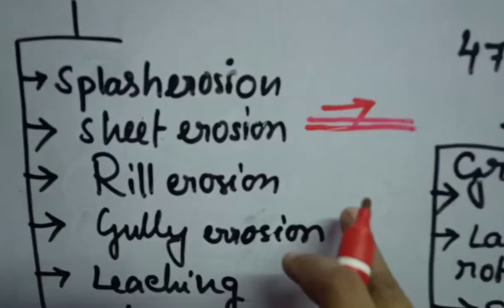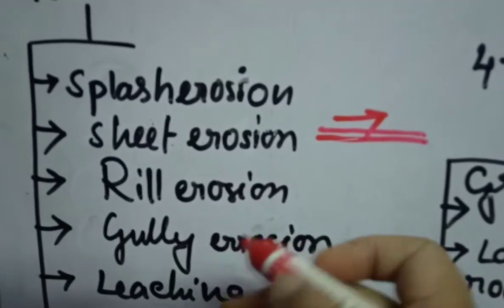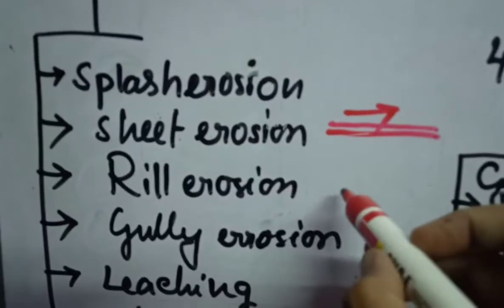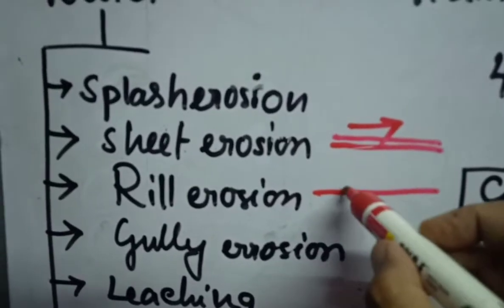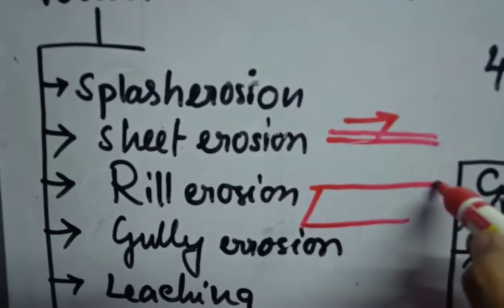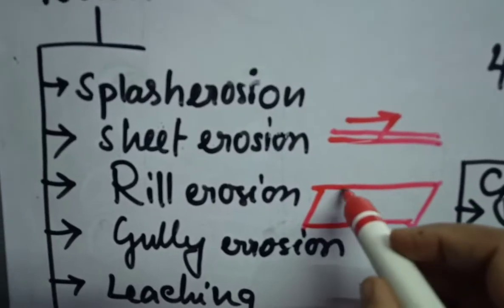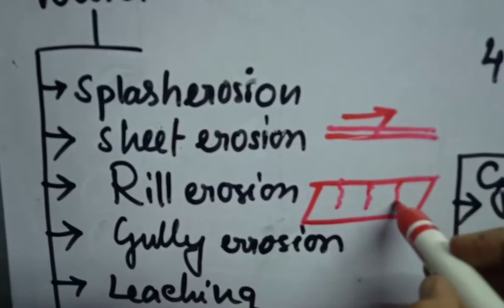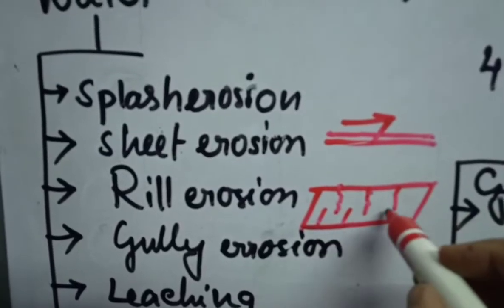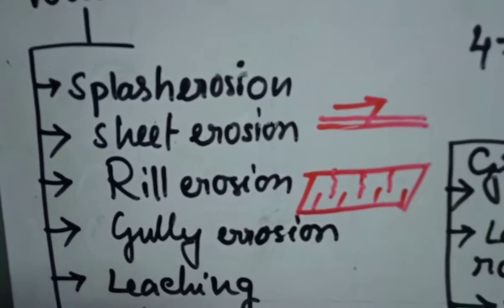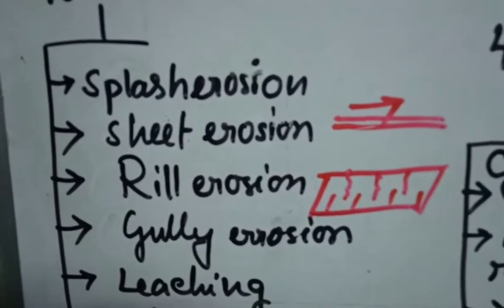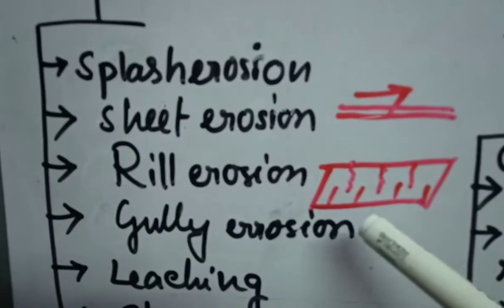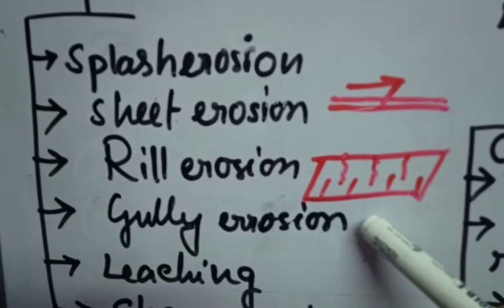Then what is rill erosion? If this kind of continuous rainfall will be there, then what we can see over the land, like if I am drawing this way, if it is a part of land, there is finger-like this kind of erosion we can see in the land masses due to this rainfall and this is called rill erosion, which is not deep, which is not too much deep.